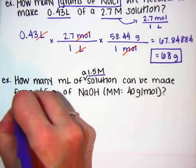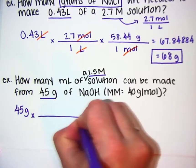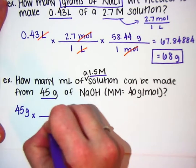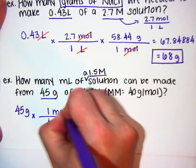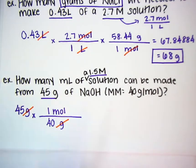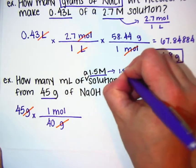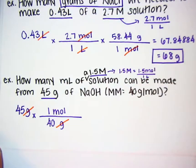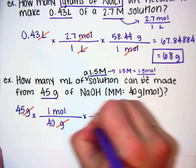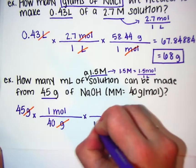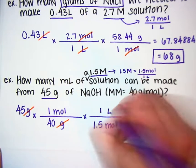So let's start with 45 grams. If you're starting with grams, the only thing you can do is plug in molar mass to get to moles — 40 grams per every one mole for sodium hydroxide. Converting from moles to liters, I use molarity: a 1.5 molar solution is equal to 1.5 moles per 1 liter of solution. Always set it up so units cancel — I want moles in the denominator, so I write 1.5 moles per every 1 liter of solution.